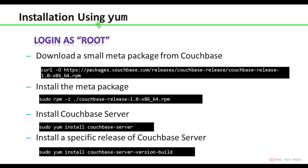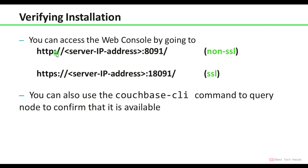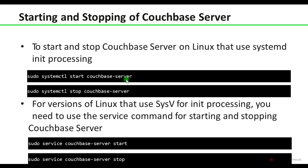These are the installation steps. Using a package manager, download a small meta package from Couchbase, install that meta package, and then install the actual Couchbase Server with the install command for the latest version. You can also install Couchbase using an RPM package — download the appropriate package from Couchbase and install it with the RPM install command. Verify the installation by accessing http://[server-IP]:8091 (non-SSL) or port 18091 for SSL. To start Couchbase Server use 'systemctl start couchbase-server', to stop use 'systemctl stop couchbase-server'. You can also use 'service couchbase-server start' and 'service couchbase-server stop'. Thanks for watching.